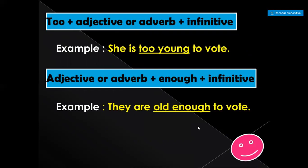'Too' plus adjective or adverb and an infinitive: 'She is too young to vote.' Adjective or adverb plus 'enough' and an infinitive: 'They are old enough to vote.'